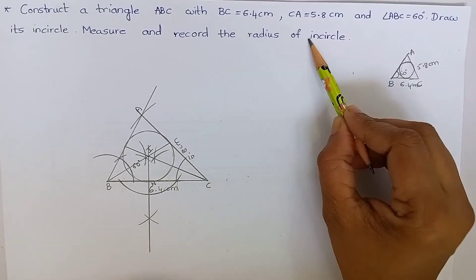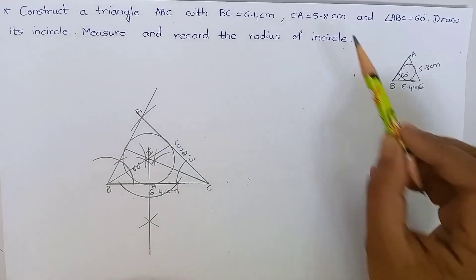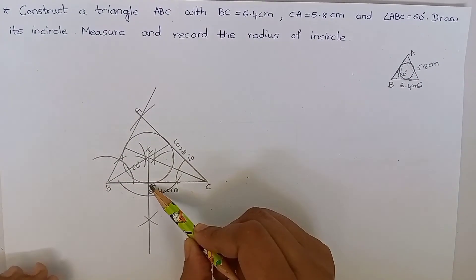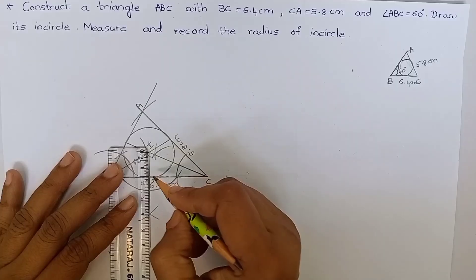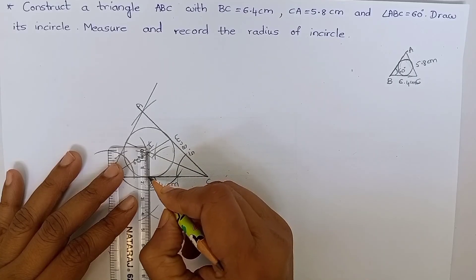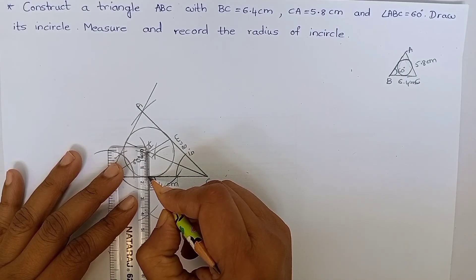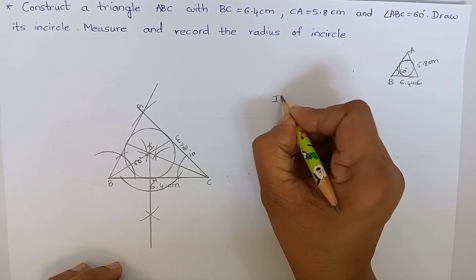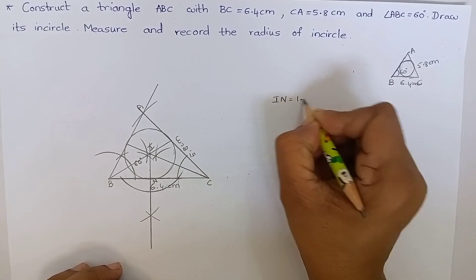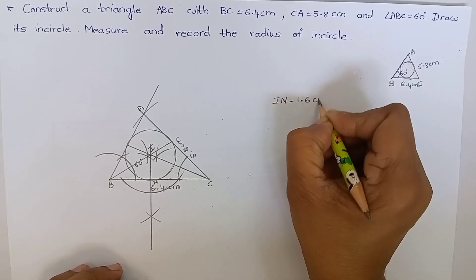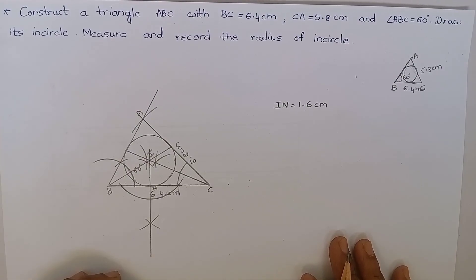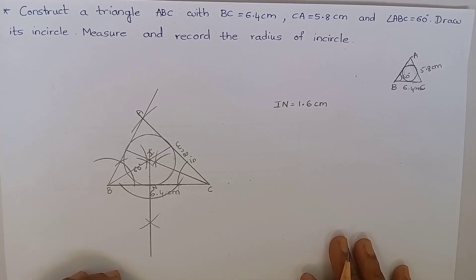Measure and record the radius of the incircle. Let's measure IN. You can see that it is 1.6 cm. IN is 1.6 cm. Hope you have understood the construction. Thank you.